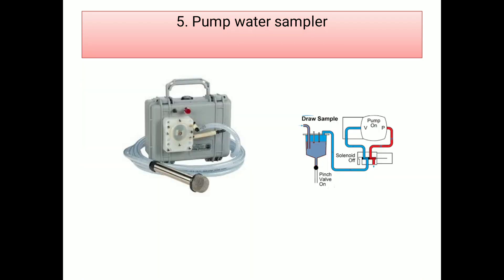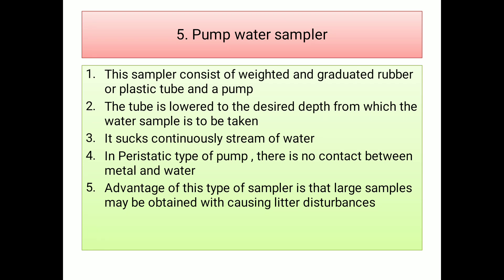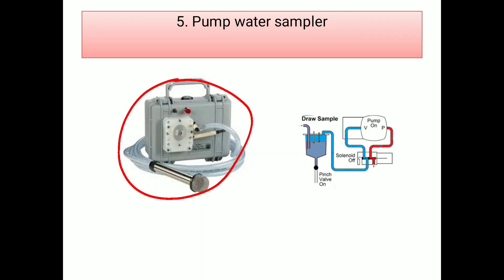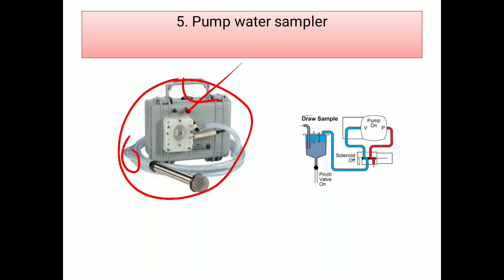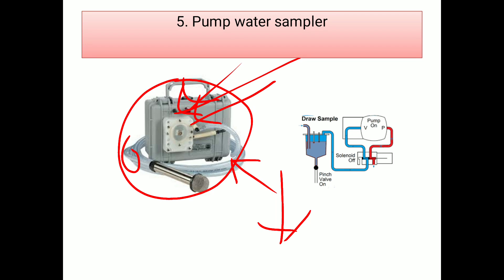Another water sampler is the pump water sampler. This sampler consists of wetted graduated rubber or plastic tubes and a pump. The tube is lowered to the desired depth from which the water sample is to be taken. It sucks a continuous stream of water. In a peristaltic pump, there is no contact between metal and water. A big advantage of this type of water sampler is that a large sample may be obtained with little disturbance, and once it reaches the desired depth, water can be easily collected.